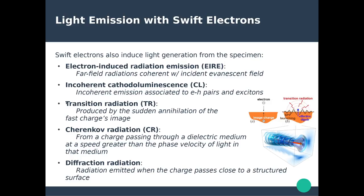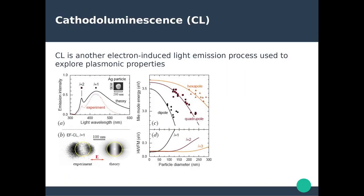We can also have transition radiation, Cherenkov radiation, and diffraction radiation — different processes that occur every time you have high-velocity electrons. The one of interest for us is cathodoluminescence, which comes from the radiative recombination of electrons and hole pairs excited by the high-velocity electron beam from the microscope. Cathodoluminescence is another electron-induced light emission process and another way to probe plasmonic properties in nanostructures: you send high-velocity electrons and collect the light re-emitted by the nanostructures after electron beam excitation.